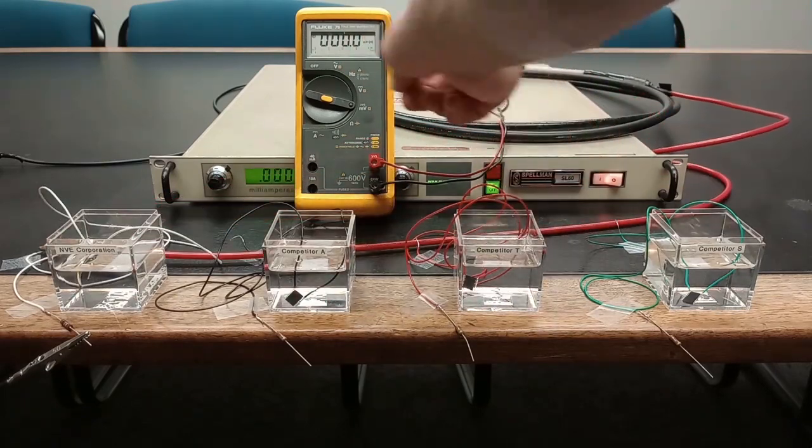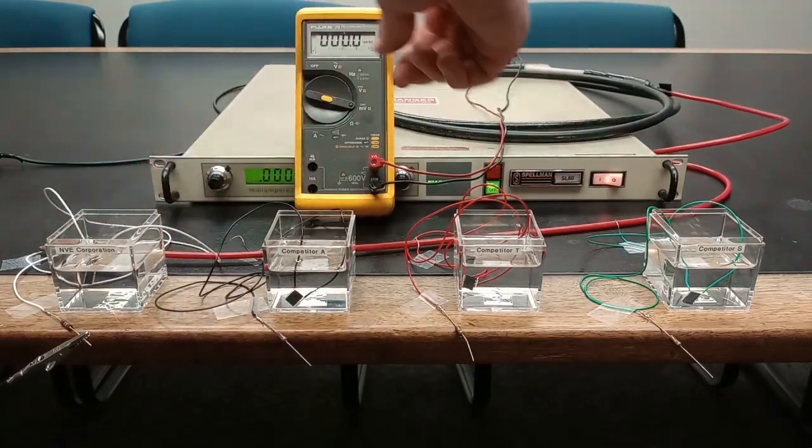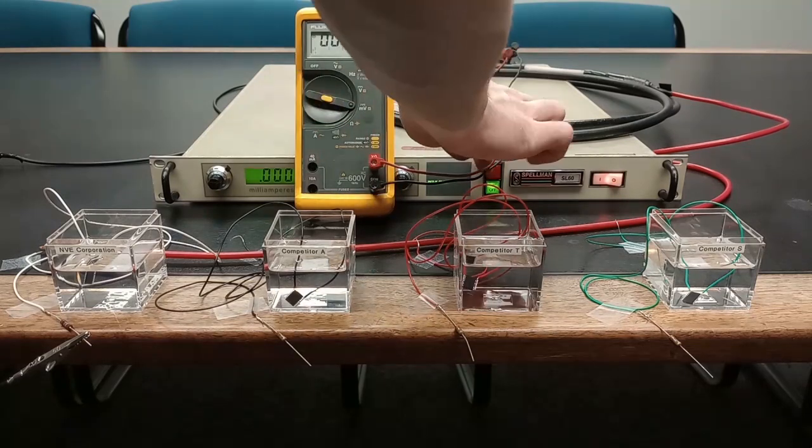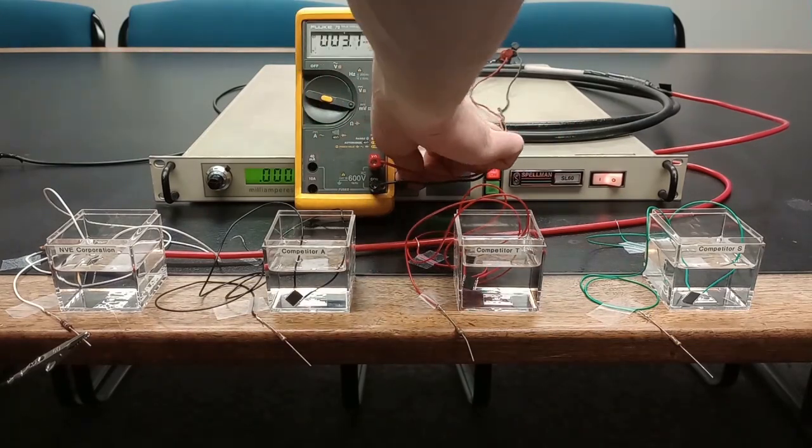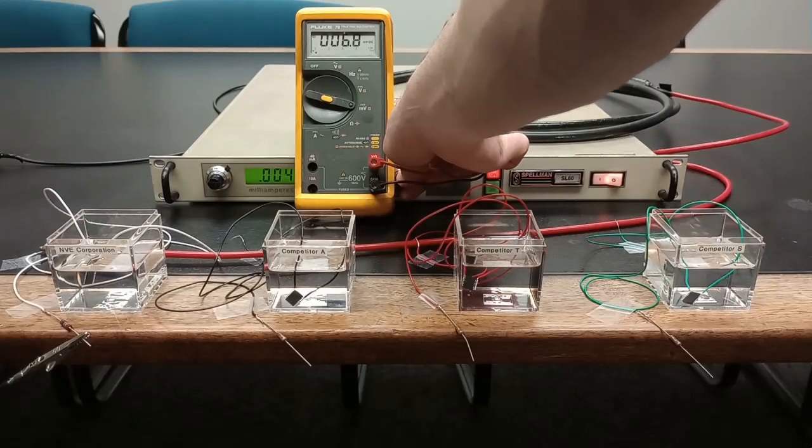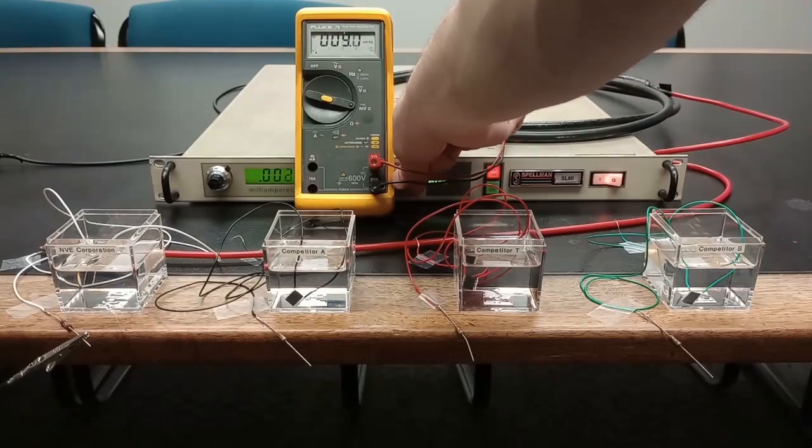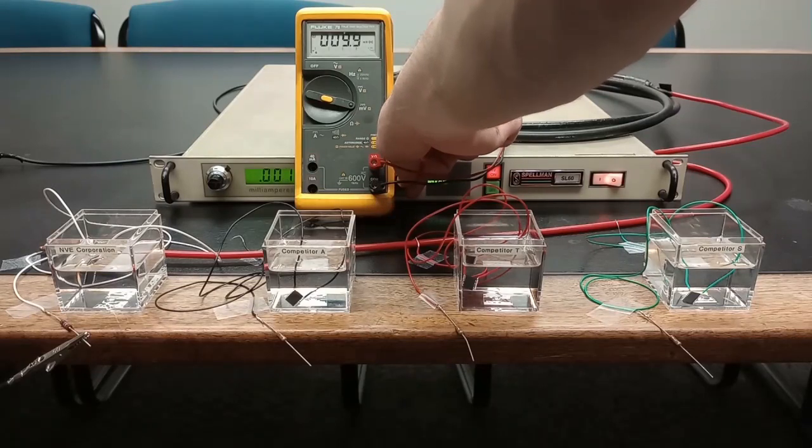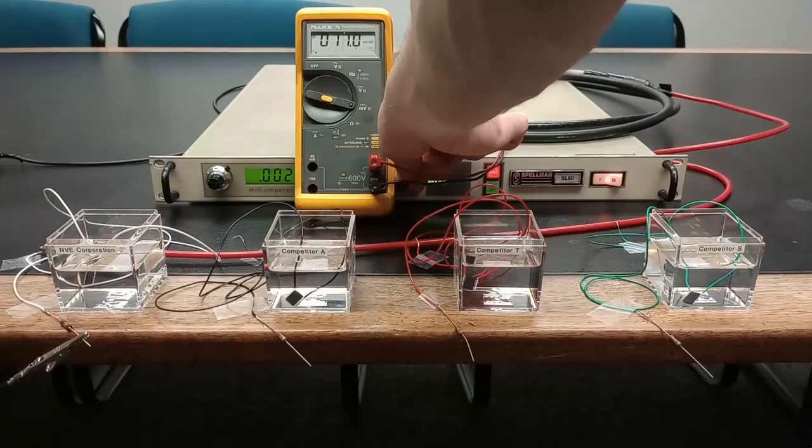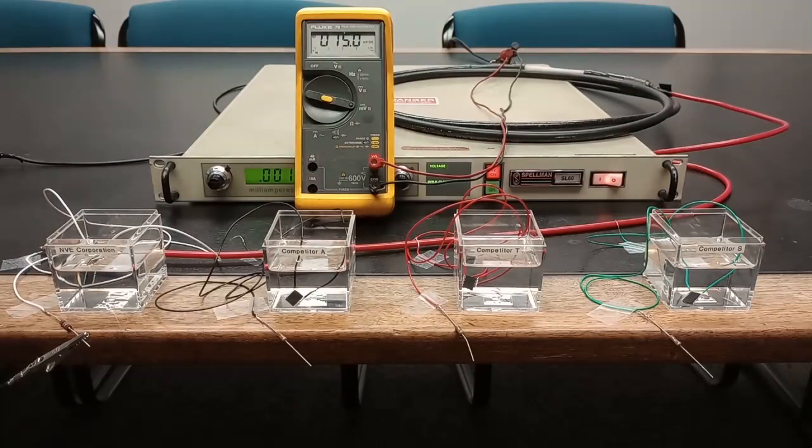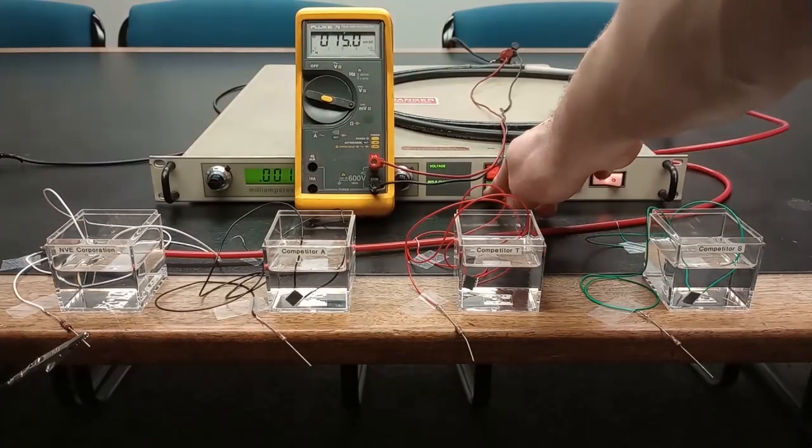We'll start with NVE's new IL700V series and crank up the voltage. We rate these parts to 7 kilovolts but as you can see they withstand significantly higher voltage. We'll push them up to 15 kilovolts and the NVE isolators withstand. They pass our safety test.